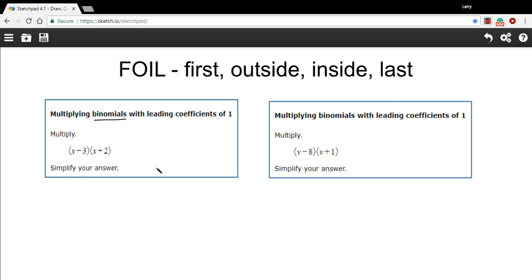So this may be review for you, but let me just show you how this works. The first term in each of these binomials is x and x. We multiply those together. x times x equals x squared. So that's first.